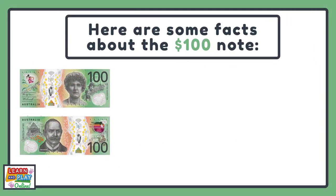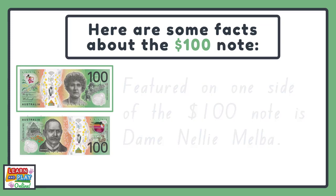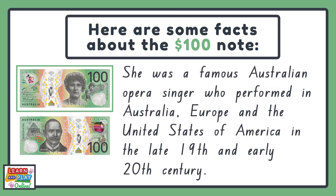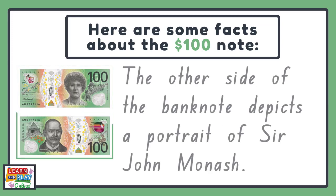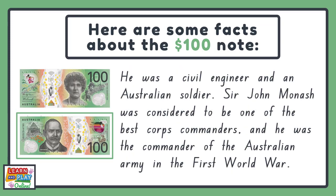Here are some facts about the $100 note. Featured on one side of the $100 note is Dame Nellie Melba. She was a famous Australian opera singer who performed in Australia, Europe, and the United States of America in the late 19th and early 20th century. The other side of the banknote depicts a portrait of Sir John Monash. He was a civil engineer and an Australian soldier. Sir John Monash was considered to be one of the best corps commanders and he was the commander of the Australian Army in the First World War.